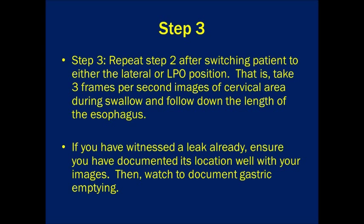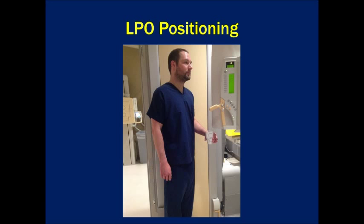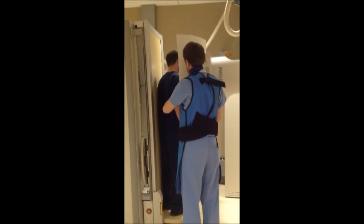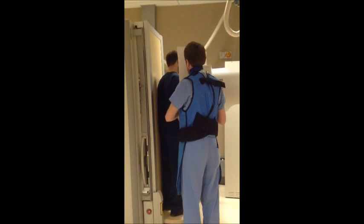In the next step, repeat step 2 after switching the patient to either the lateral or left posterior oblique position. If you have already witnessed a leak, make sure to document the location to compare on other views. Here is an example of the patient in the left posterior oblique position. Here you can see the resident following the contrast bolus with the fluoroscopy image intensifier with the patient in the left posterior oblique position.